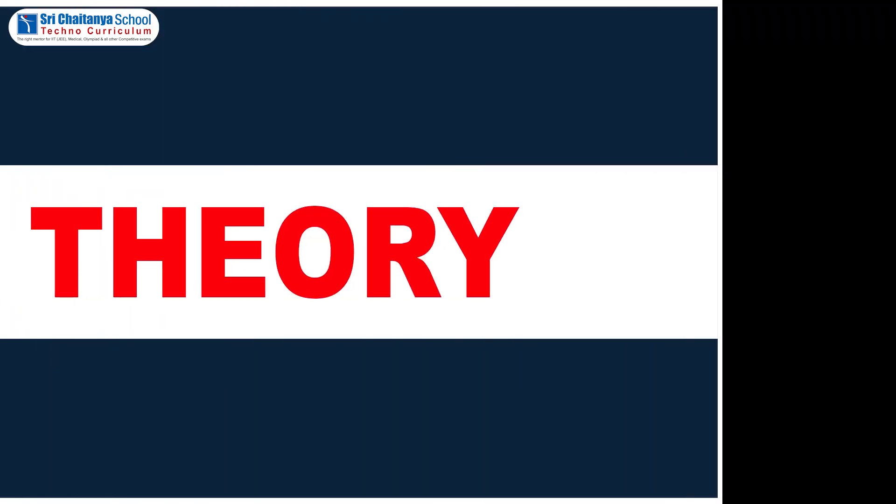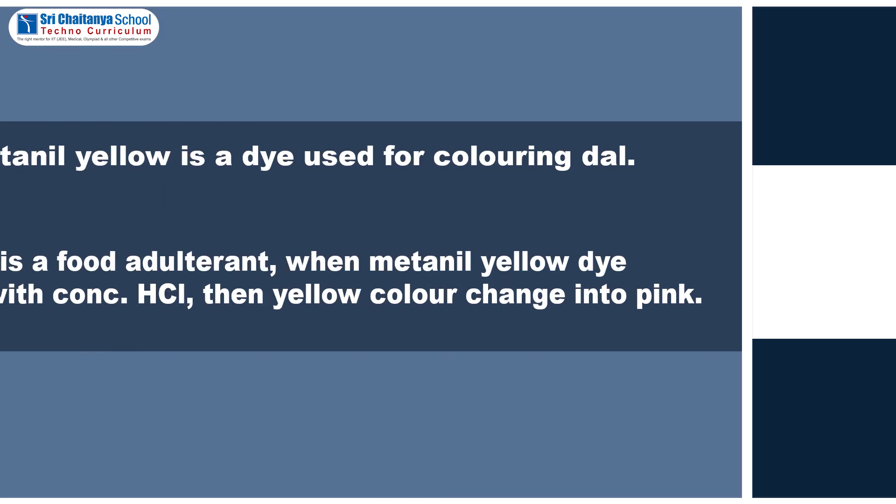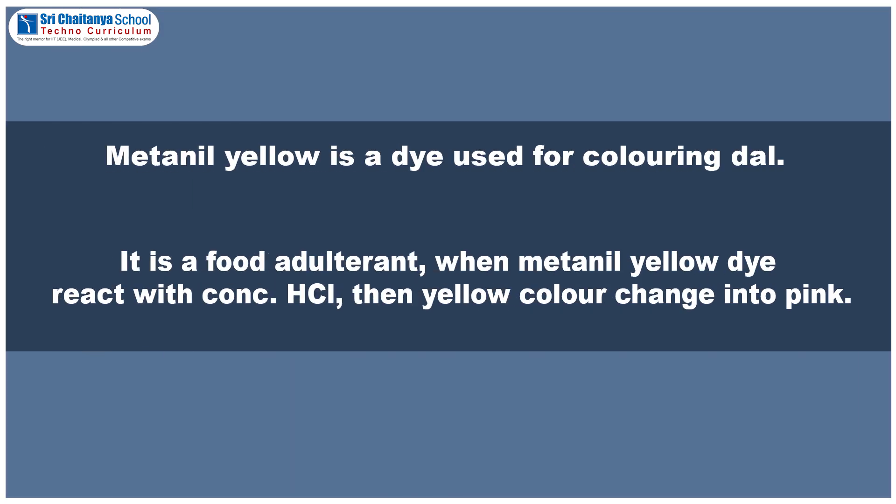The theory of this experiment is that metanil yellow is a dye used for coloring dal. It is a food adulterant. When metanil yellow dye reacts with concentrated HCL solution, then the yellow color changes into pink color.